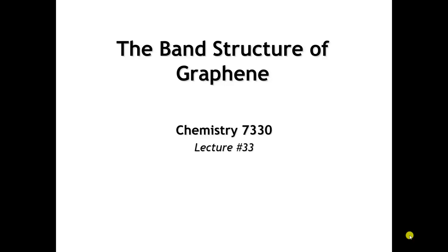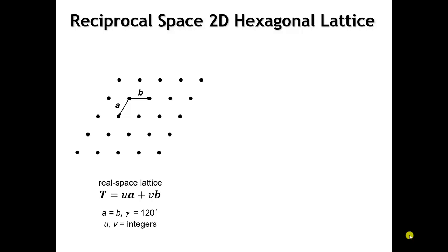Before we leave two-dimensional materials, it would be a pity not to talk about what might be the most famous two-dimensional material: graphene. One of the things we're going to encounter to describe the band structure of graphene is that our unit cell axes are no longer orthogonal. We have a hexagonal lattice, so let's start by figuring out how we're going to define the reciprocal space lattice for a hexagonal system.